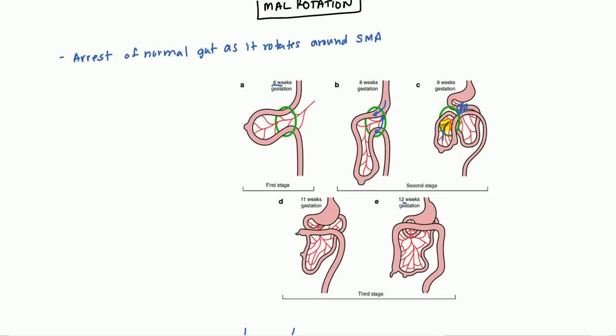Then what happens is once you get this 90 degree rotation, the gut will actually go back into the abdomen of the fetus and it will continue another 180 degree rotation. Once it goes back, you have 90 degrees here and it's going to continue to do another 180 degree rotation. 90 plus 180 is going to be a total of 270 degree rotation.